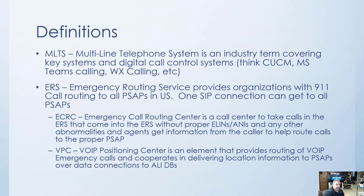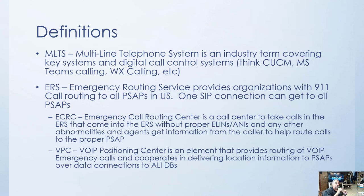ECRC — these are call agents inside the ERS. If a call comes in and they can't route it to a PSAP, a call agent picks up and asks for your address so they can route to the right PSAP. They're not dispatchers — their systems had trouble routing, so they need your location to get you to the right PSAP in your jurisdiction. VPC — the VoIP Positioning Center — is an element inside the ERS responsible for figuring out where to route the call, meaning which PSAP the ERS needs to send the call to.